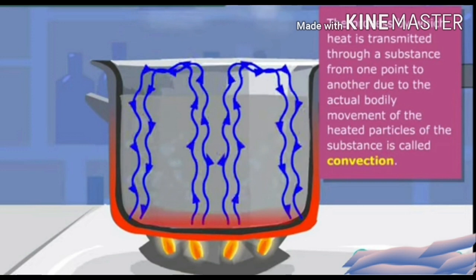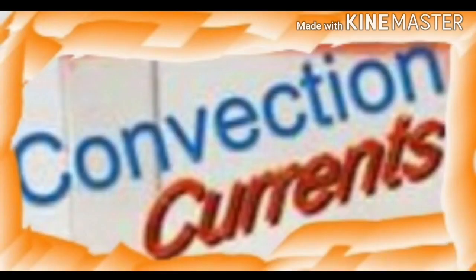The cold water from above sinks downwards to take the place of hot rising water. This cold water then gets heated by the burner and also rises upwards, carrying its heat upwards. This process of hot water rising upwards and cold water sinking downwards takes place again and again, due to which the whole water in the beaker gets heated uniformly. The circulatory movements of water in the beaker, in which hot water rises and cold water sinks again and again, are called convection currents.